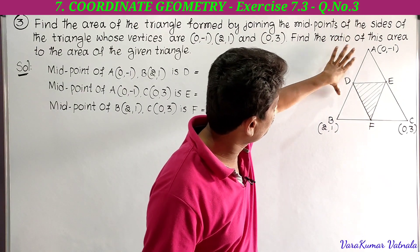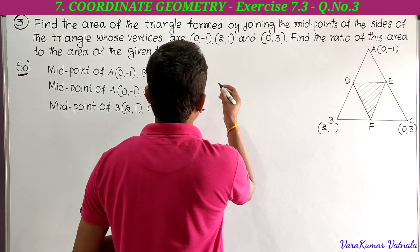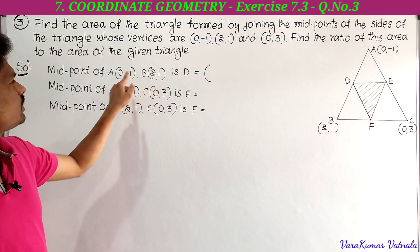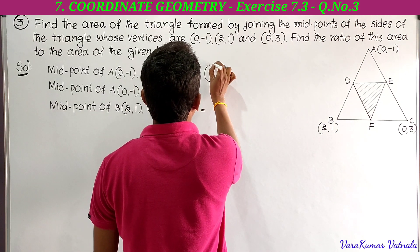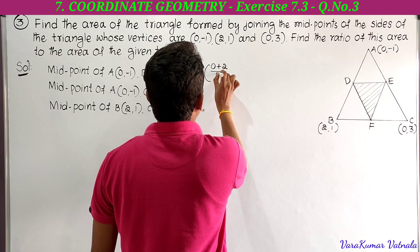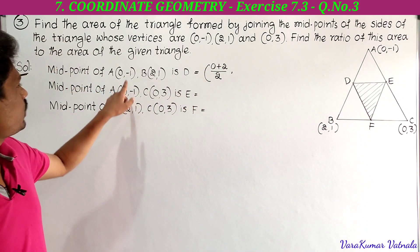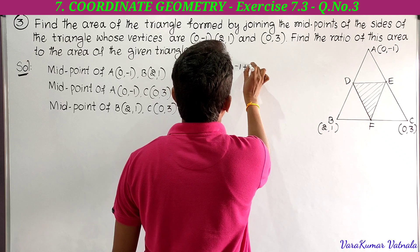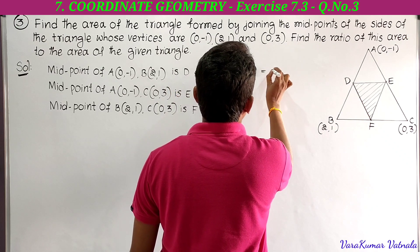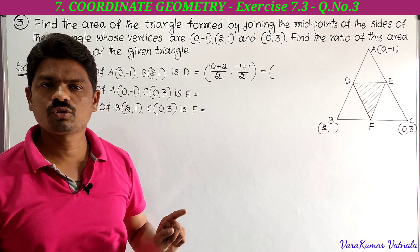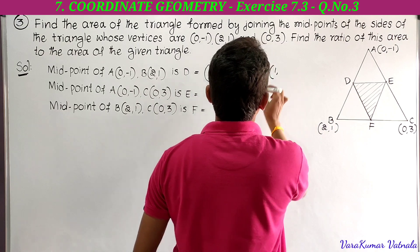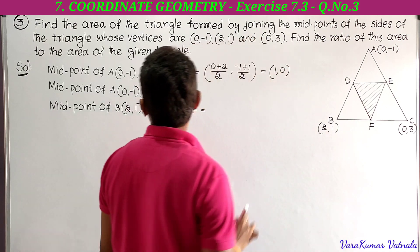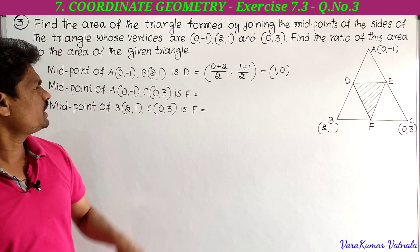The midpoint D of AB: x-coordinate is (0 + 2)/2 = 2/2 = 1, and y-coordinate is (-1 + 1)/2 = 0/2 = 0. So D is (1, 0).